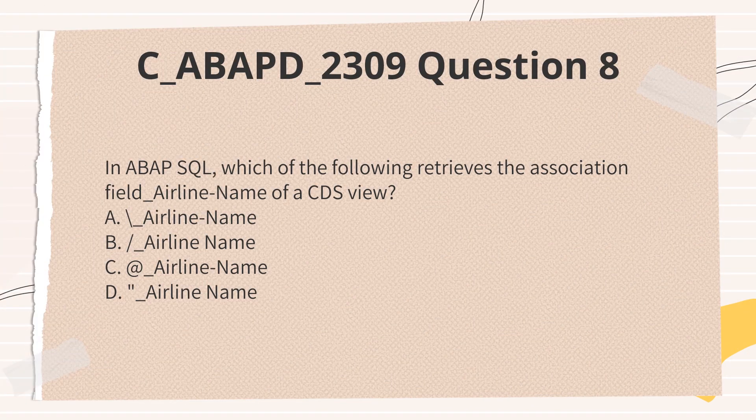In ABAP SQL, which of the following retrieves the association field _airline_name of a CDS view? A. _airline_name. B. _airline_name. C. @_airline_name. D. _airline_name.